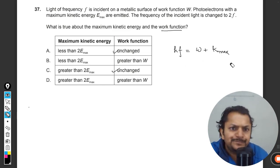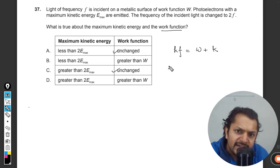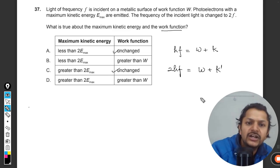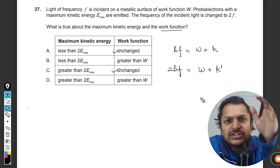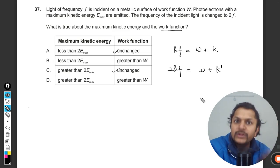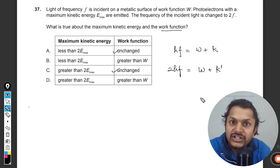This is one case and I'm just calling it k. In the second case, when 2 is multiplied with the frequency, the energy of photon is doubled. Work function remains the same but now the kinetic energy is k'. Definitely now the kinetic energy is more because the frequency is more and the photon is having more energy.